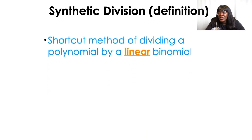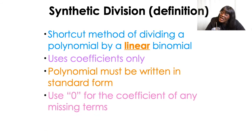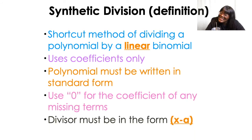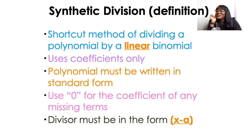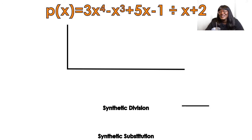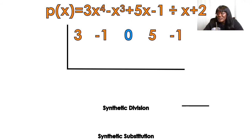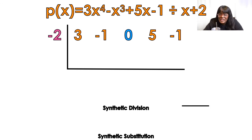Synthetic division — everybody loves synthetic division so much more than long division. First thing you want to do is fill in your coefficients: the 3, the negative 1, I put a zero in because there's no squared term, then the 5, and then the negative 1. You always need to put in zeros when you're missing an exponent. If my divisor is x plus 2, I need to use negative 2, because setting x plus 2 equal to zero gives x equals negative 2 — you use the opposite.